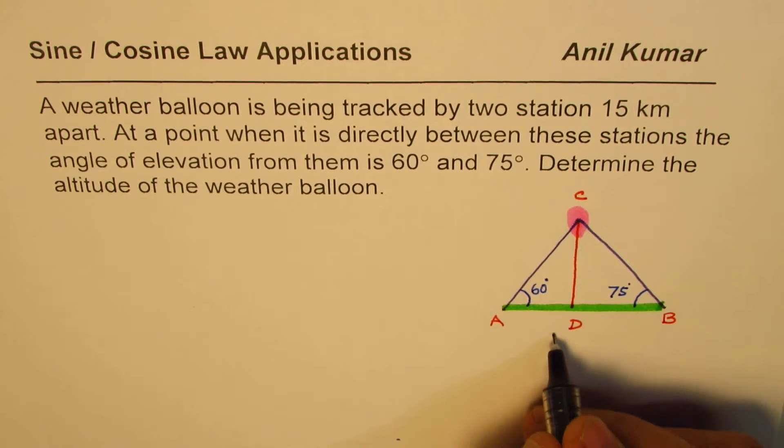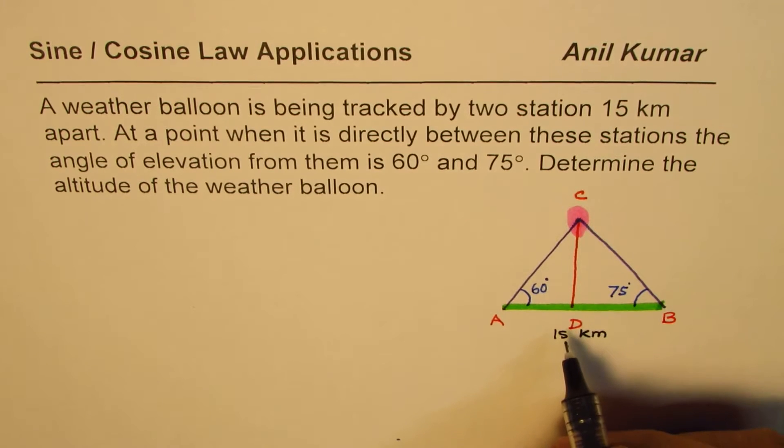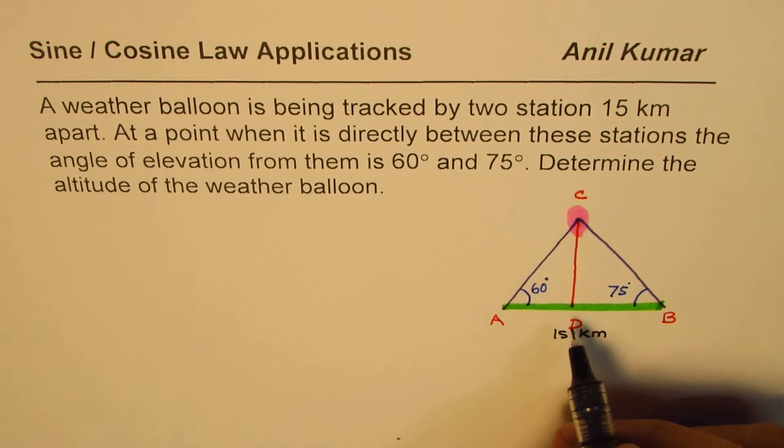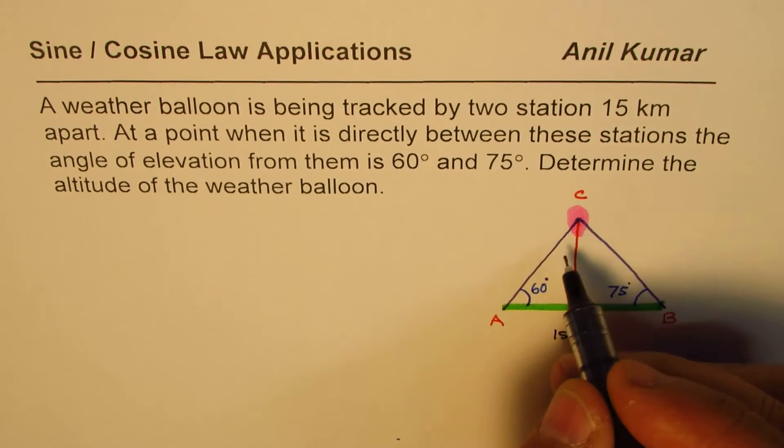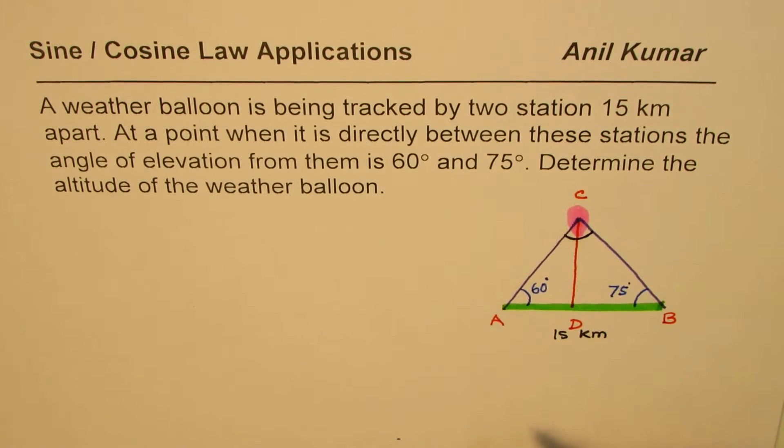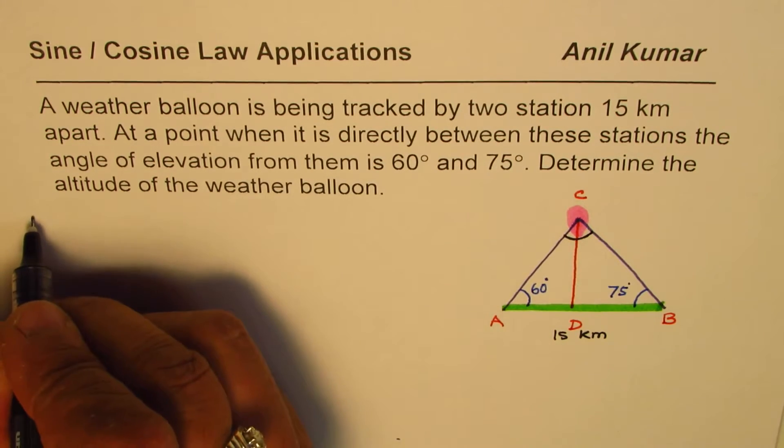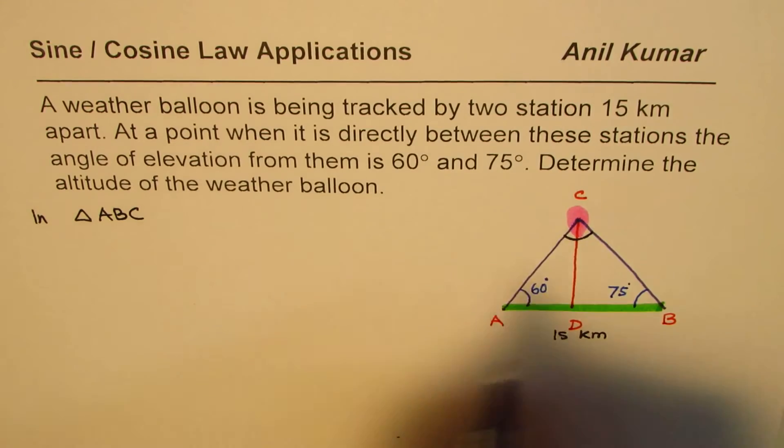Now in this case we are also given the distance between the two tracking stations which is 15 kilometers, and we need to find this height. For the time being, what we can do from here is we can actually apply sine law and find one of the sides. We know actually the angle C since the sum of these three angles is 180 degrees.